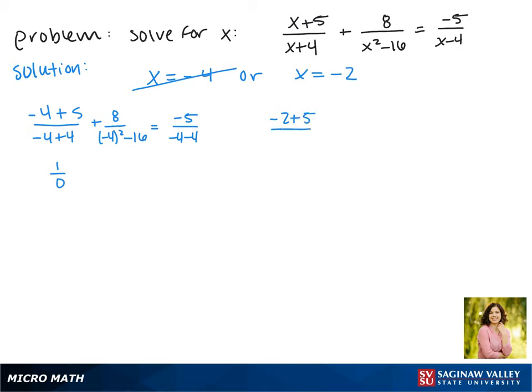We have to do the same with -2. Plug it back in to make sure that it works. On the right we get -5/(-2-4). Remember we can't move anything across the equal sign; we have to work this out. We get 3/2 + 8/((-2)²-16) = -5/(-6). That's 3/2 + 8/(-12) = -5/(-6).